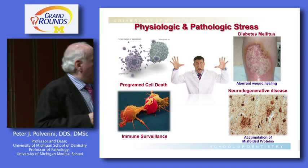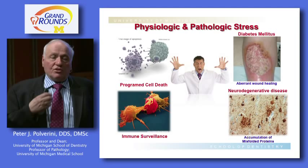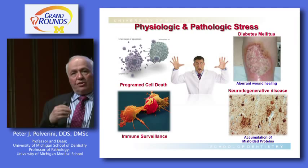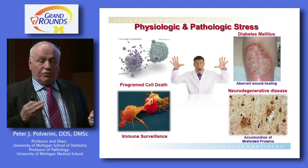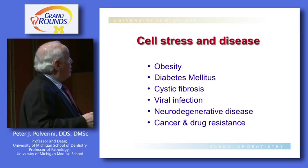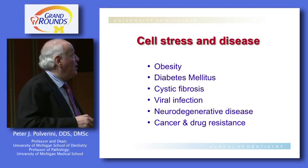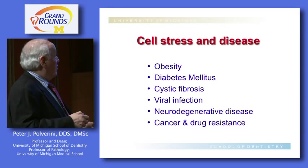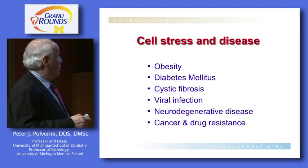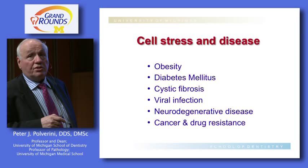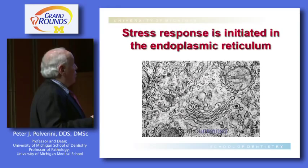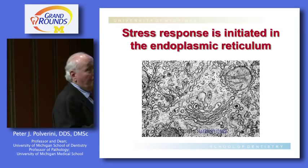When a cell is stressed — either acutely or chronically — a machinery is put into place to deal with it, defined as the unfolded protein response. Cell stress is associated with obesity, diabetes, cystic fibrosis, viral infections, prion disease, Alzheimer's, and neurodegenerative disorders — as well as cancer and drug resistance. This all occurs in the endoplasmic reticulum. Conditions that can induce stress include nutrient deprivation, starvation, calcium imbalance, and hypoxia — all typically seen in a tumor.